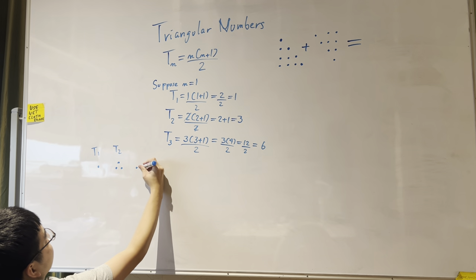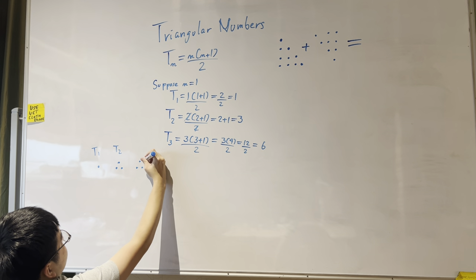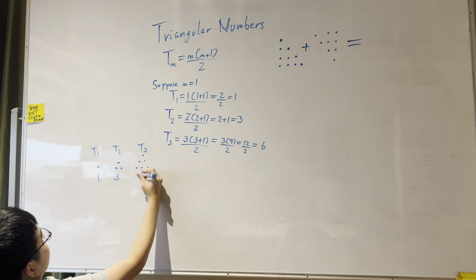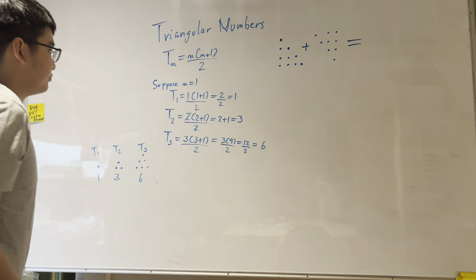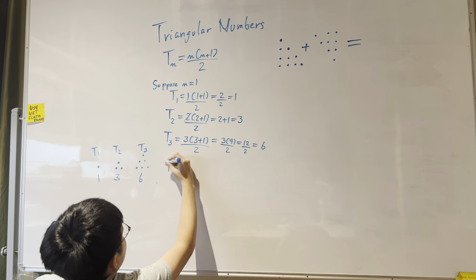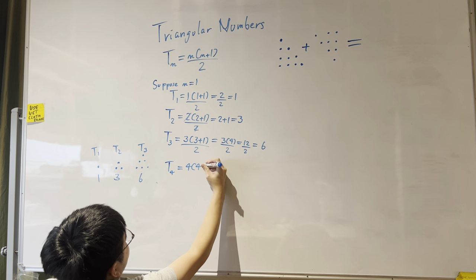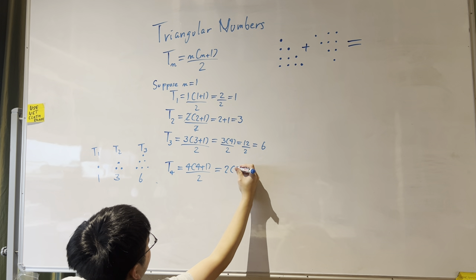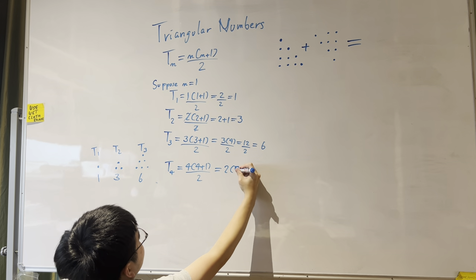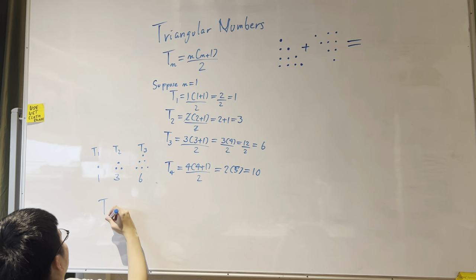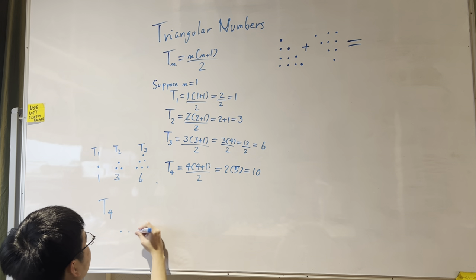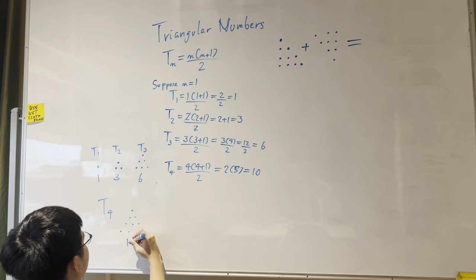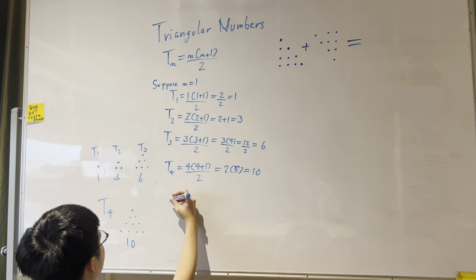That's just right, because we have three dots at the bottom, two dots in the middle, and one dot at the top — giving 6. Continuing, t(4) equals 4 times (4 plus 1) divided by 2, which is 2 times 5, so it's 10. So t(4) gives us a triangle with rows of 4, 3, 2, 1, totaling 10.